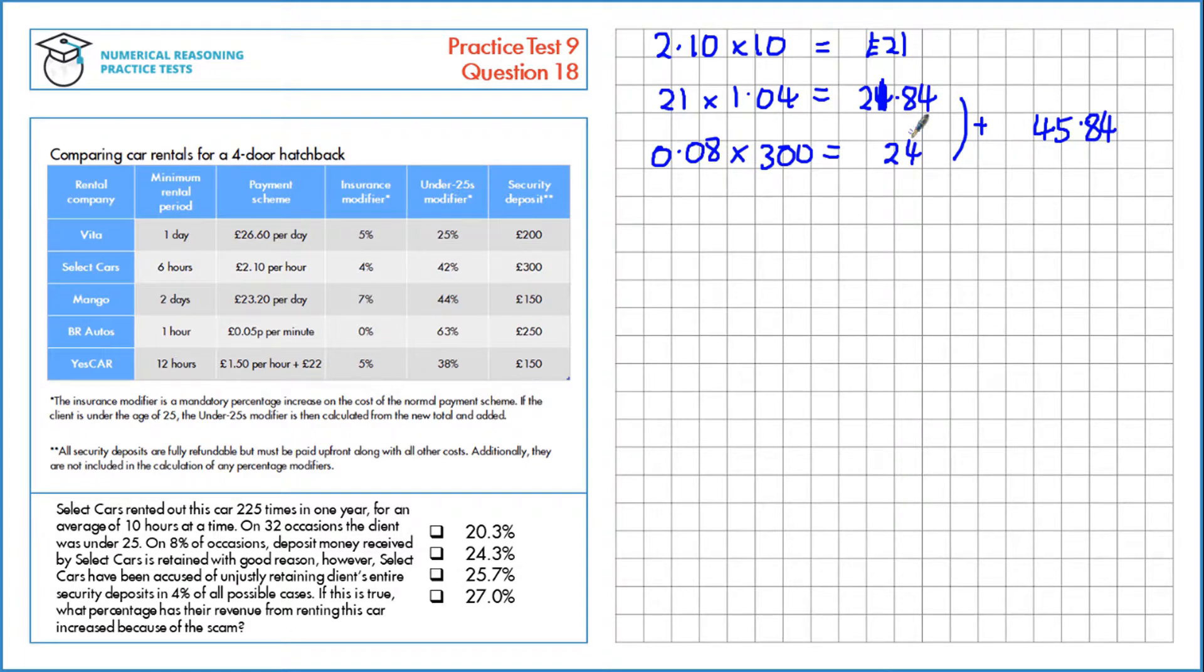This is only for the over 25s, and we know that 32 people are under 25. So 225 subtract the 32 under 25s is 193. We've got 193 people multiplied by £45.84 per time, which is £8,847.12.